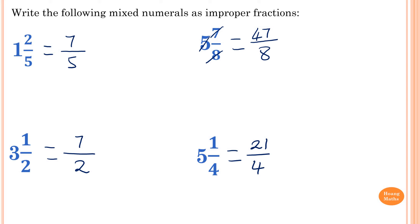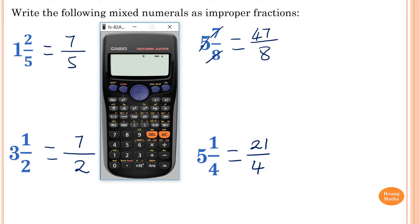You can also use a calculator to check. For 1 and 2 fifths, press shift fractions, enter 1 and 2 over 5, press equal — you get 7 over 5, correct. For 3 and 1 half, enter it and press shift SD — 7 over 2, correct. For 5 and 7 over 8, enter and press equal — 47 over 8. And for 5 and a quarter, press 5, 1 over 4, equal — 21 over 4. Correct.